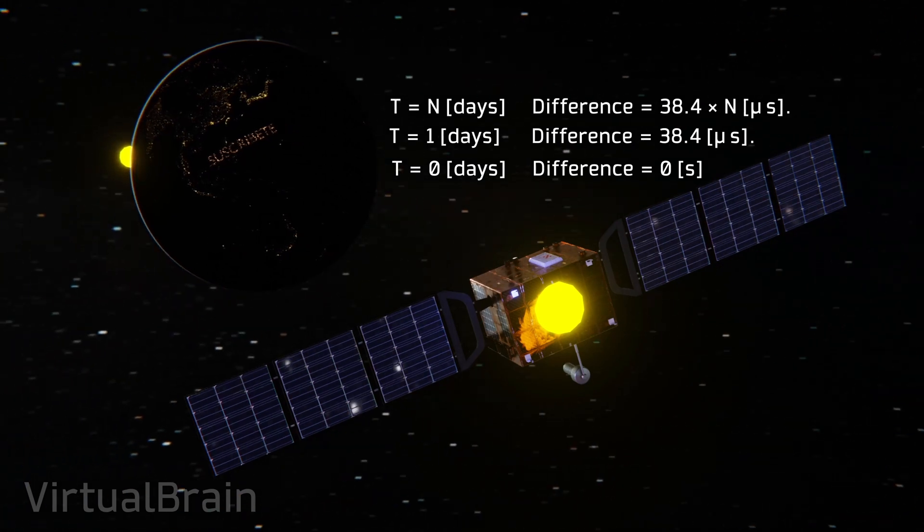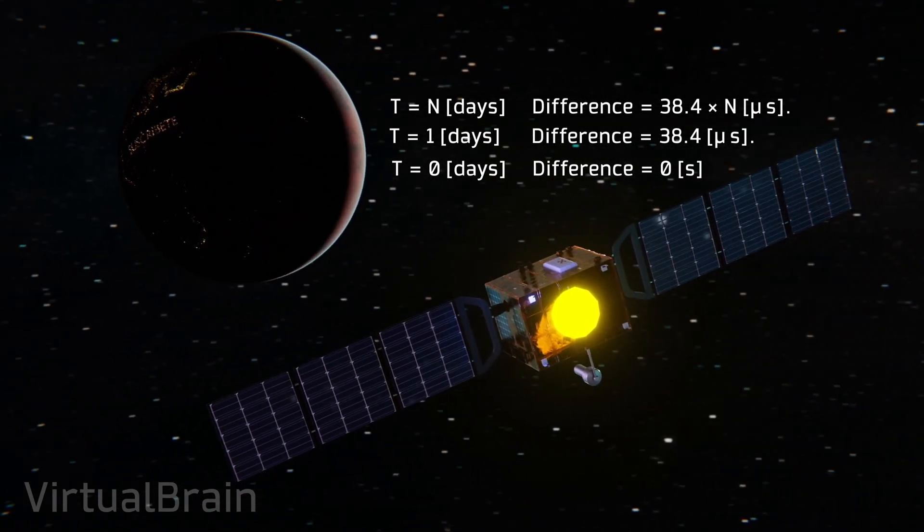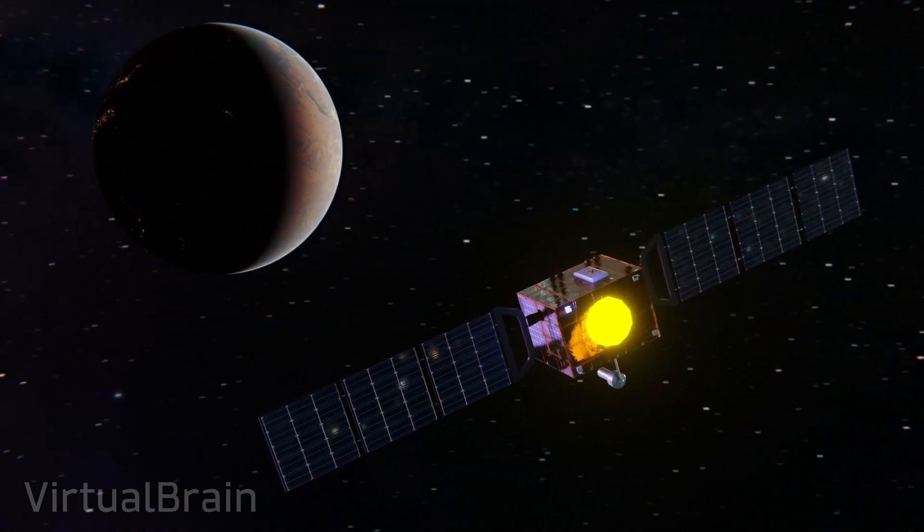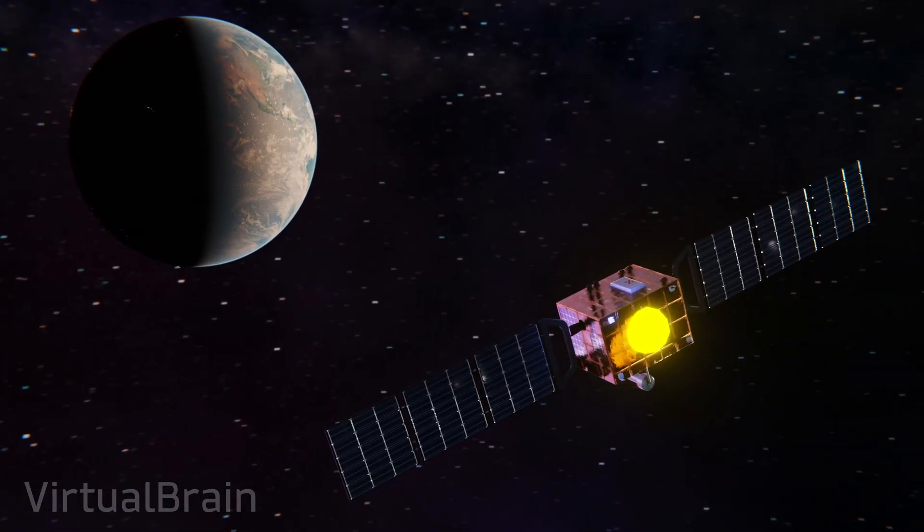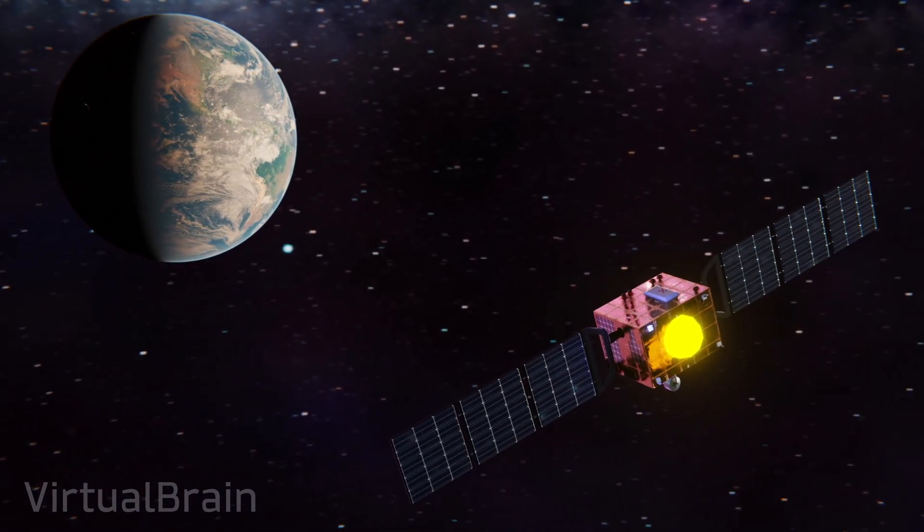Fortunately, thanks to the knowledge of the theory of relativity, it is possible to predict the time desynchronization with sufficient accuracy and thus electronically adjust the values delivered by the atomic clock.